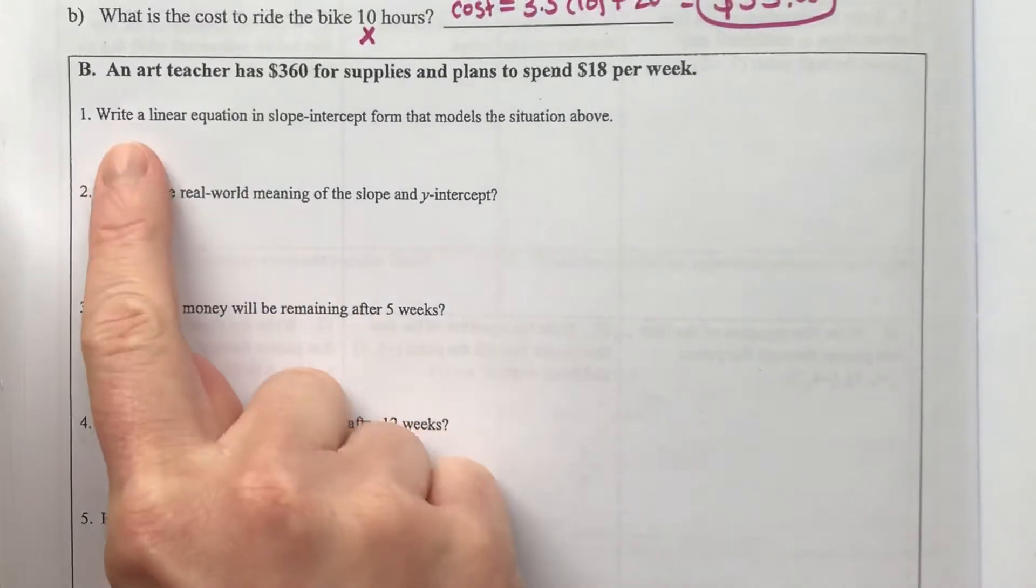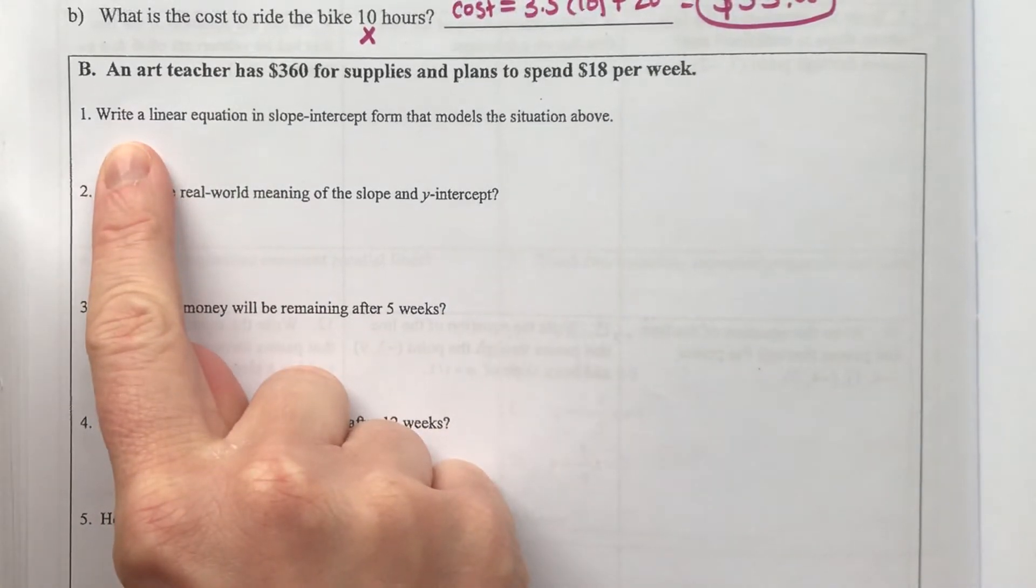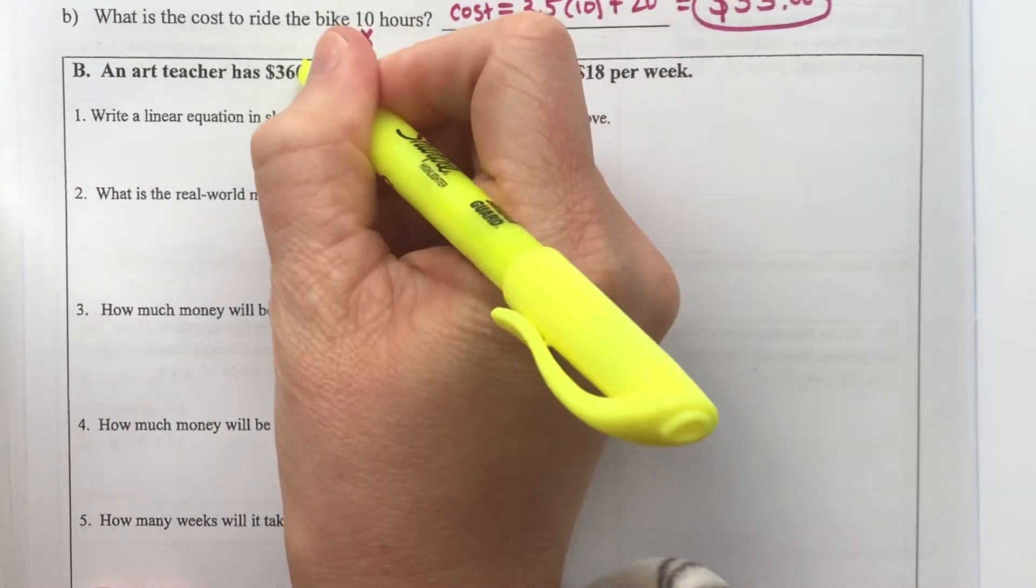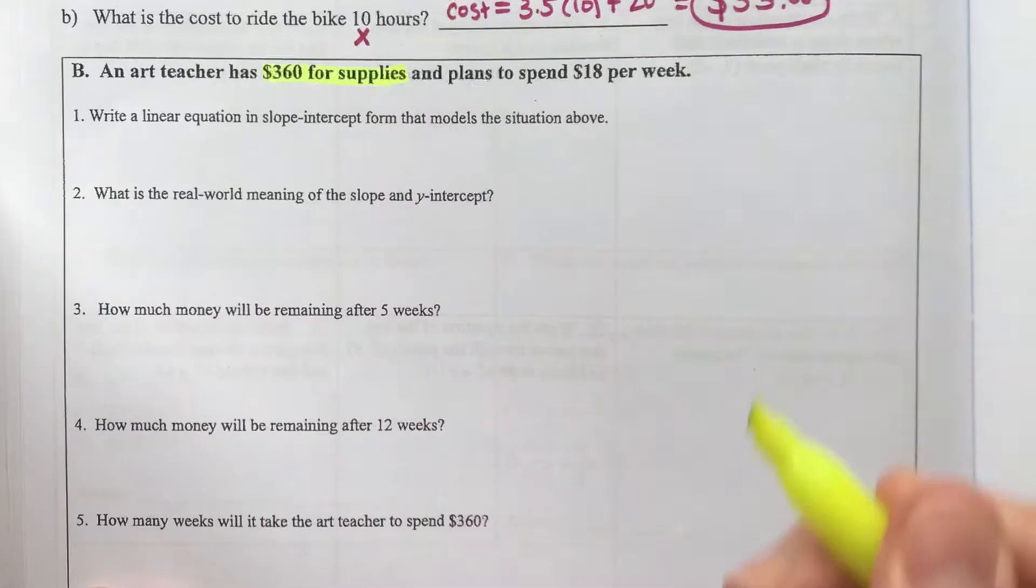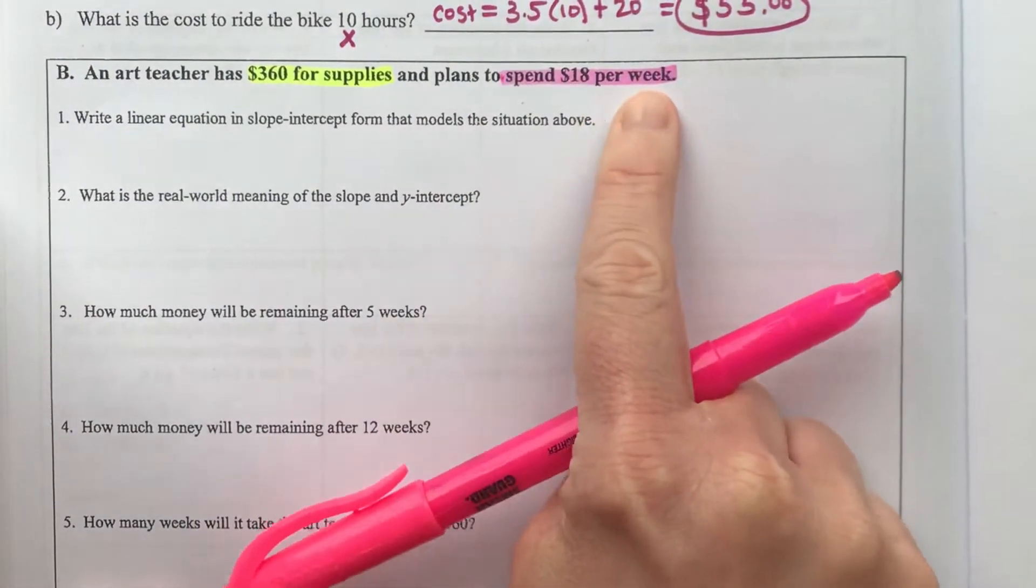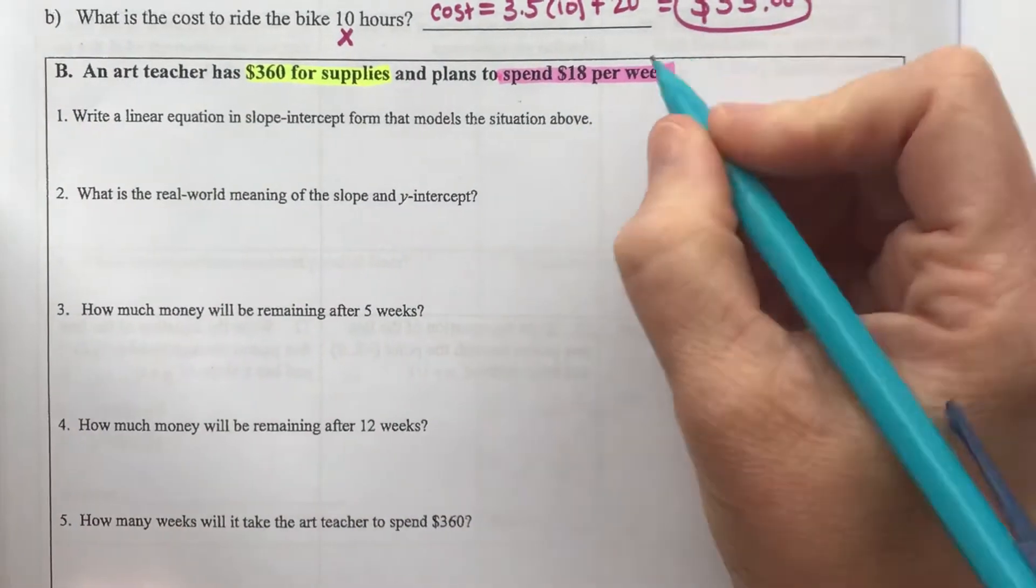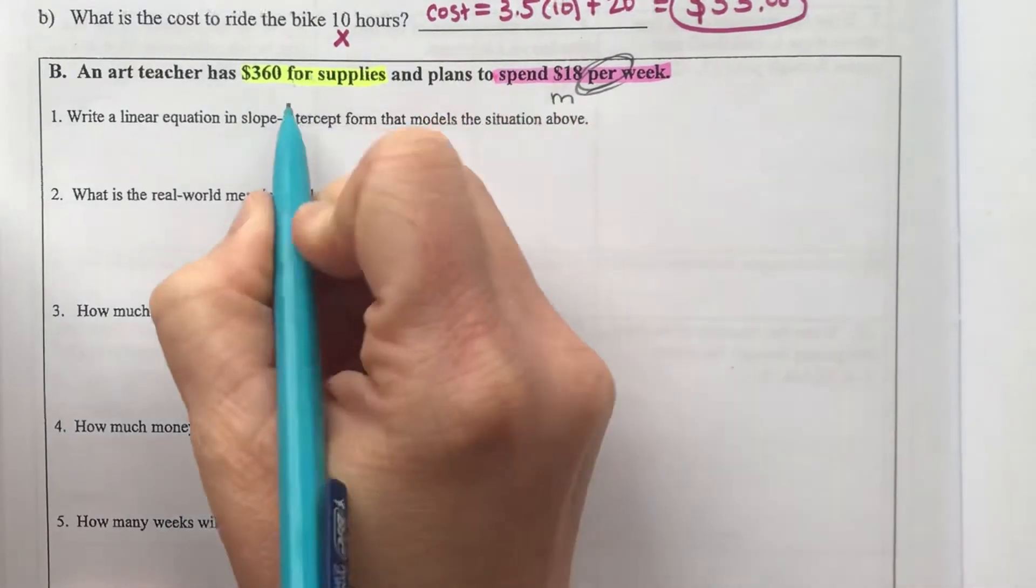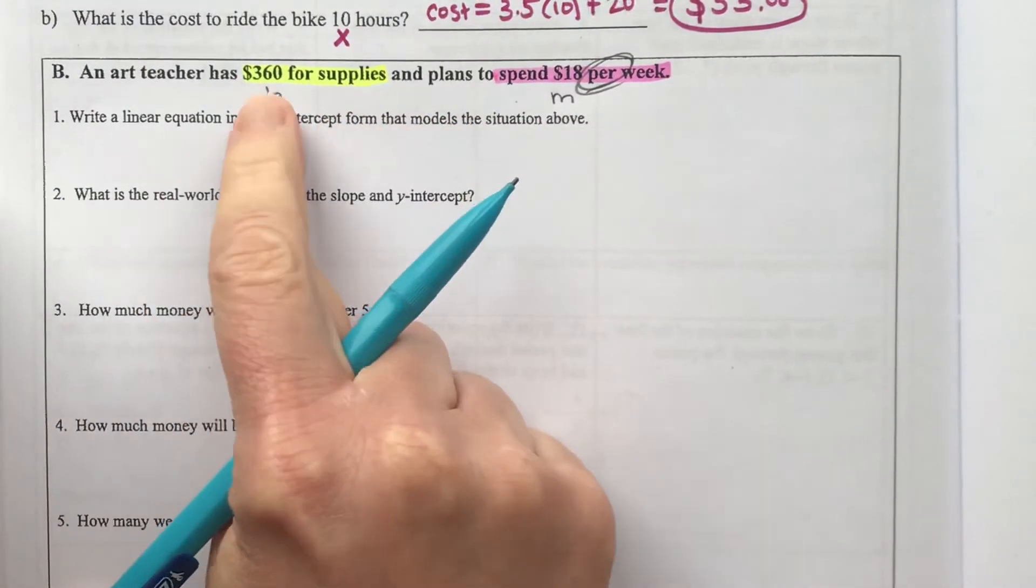The first question asks us to write a linear function in slope-intercept form that models the situation above. Looking at what we're given, the teacher started with $360 for supplies and has a rate of spending per week. When you see the word 'per', that's an indication this is your slope, and the starting amount would be your y-intercept b.